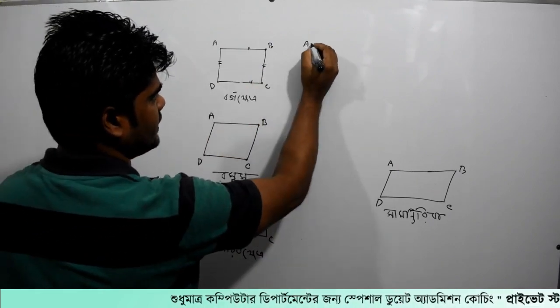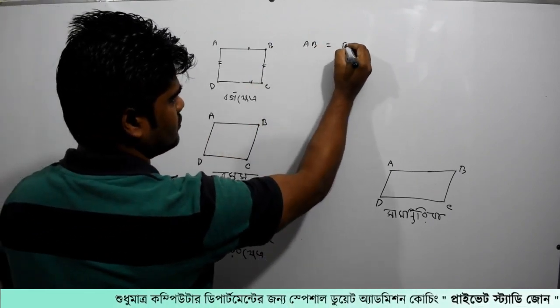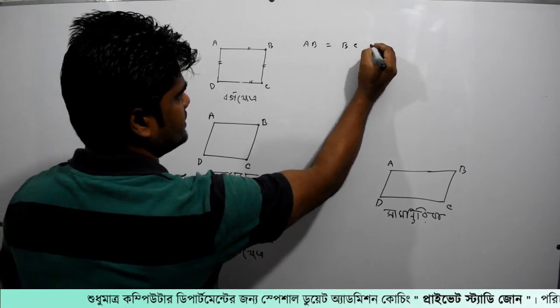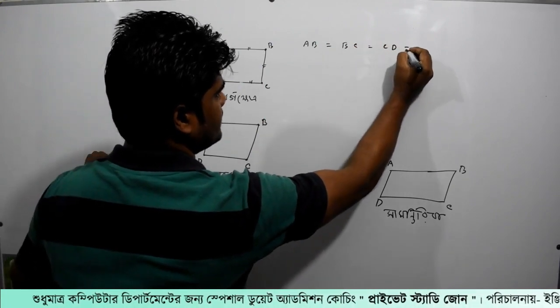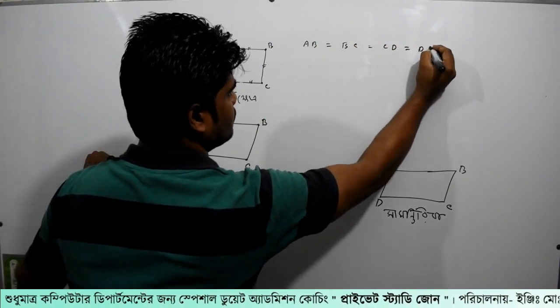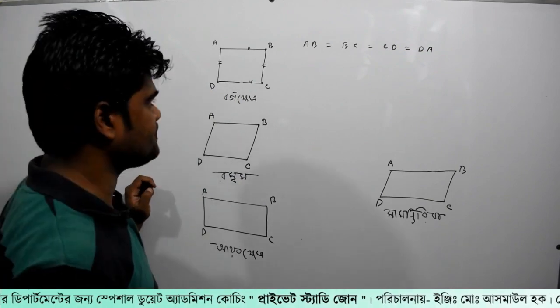This is the meaning: the fact that we have to write AB equal to BC equal to CD equal to DA. Okay, this is the meaning of the truth.